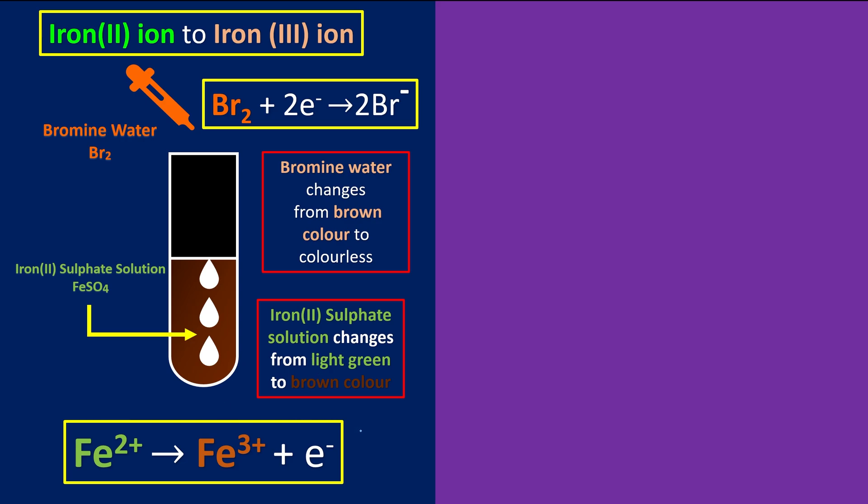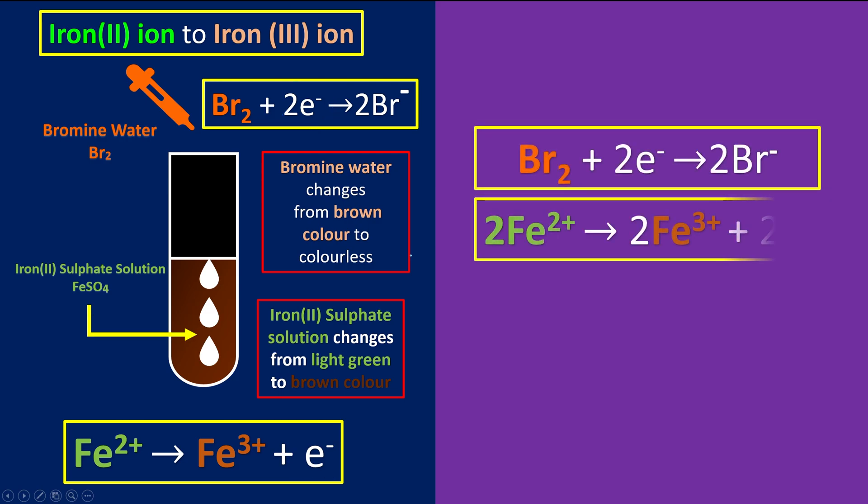Do you realize that in our oxidation half equation, we only release one of the electrons. Meanwhile, our reduction half equation will receive two electrons. So in order to balance this one, we're going to times 2 to all of the things in our oxidation half equation. So this is why we're going to have something like this. Now the electrons are balanced.